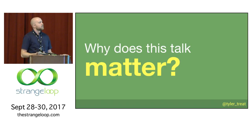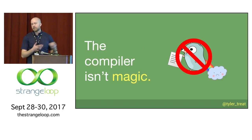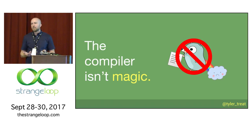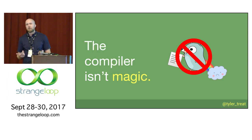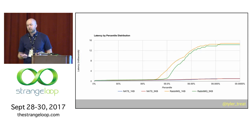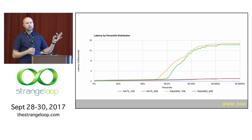So why does this talk matter? The compiler isn't magic. It doesn't just take in your shitty Go code and output pristine machine code. It's very good at what it does and it does a lot of optimizations, but it's not perfect — it can't read your mind. So we have to be mindful of performance when it matters. And to be fair, it doesn't always matter, but when it does, we have to be thinking about that.